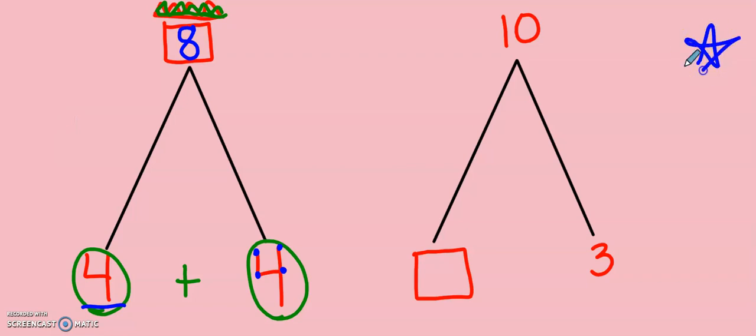Let's go over to the second math mountain on this page. Now, when I look at this math mountain, I already have my biggest number, my sum or my total. It's already at the top for me. The number that I'm missing is down at the bottom, shown by this mystery box. That's our missing number. Now, I do have one of my addends, which is three, but I need to find my other addend. Do you know how we could possibly do that?